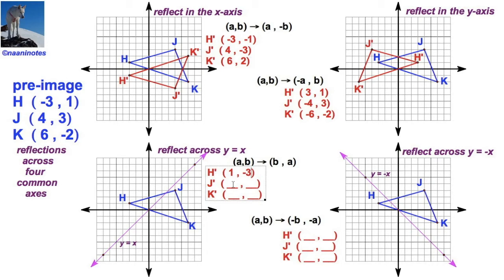If j is 4, 3, then j-prime is 3, 4. If k is 6, negative 2, then k-prime is negative 2, positive 6.